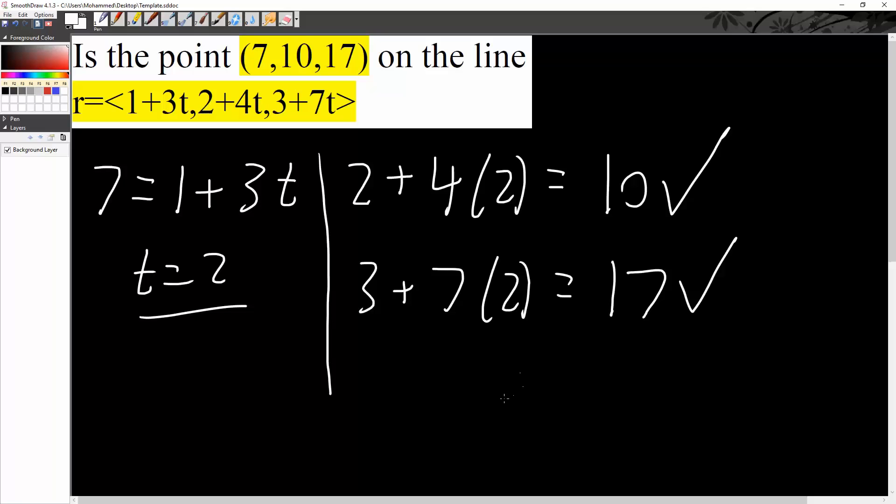Since all three statements are true, therefore the point 7, 10, 17 is on the line. So we write yes, that the point is on the line. And that's all we need to do.